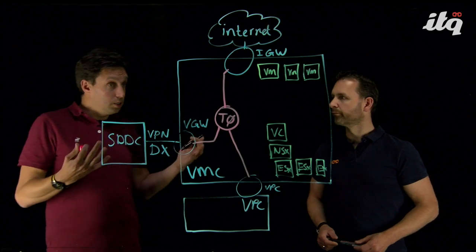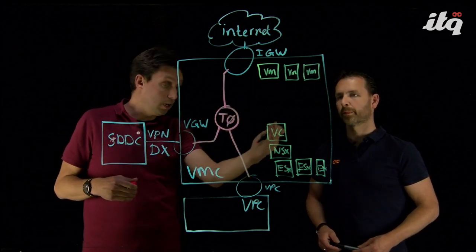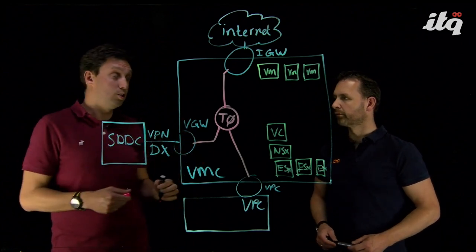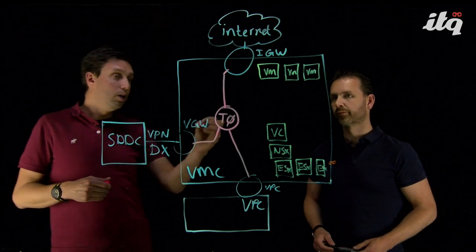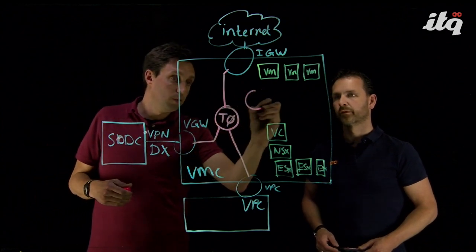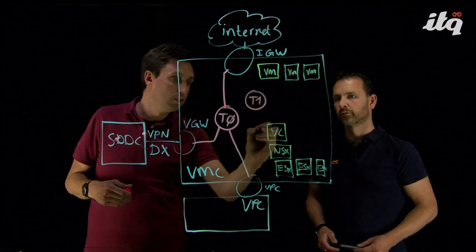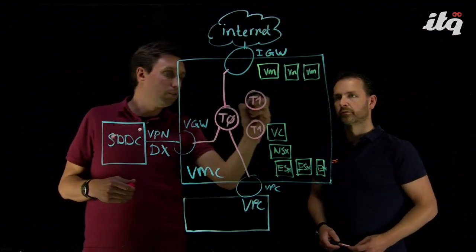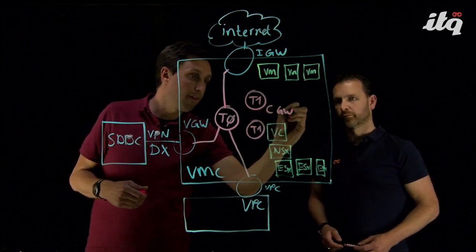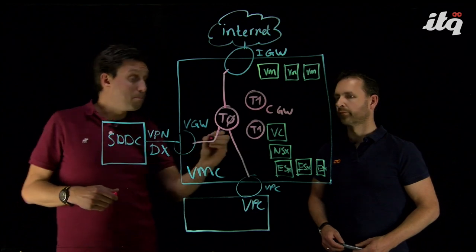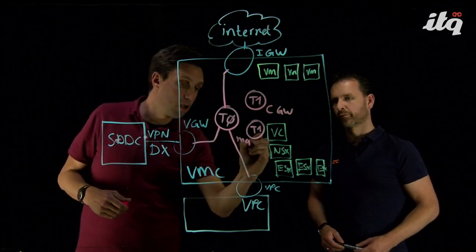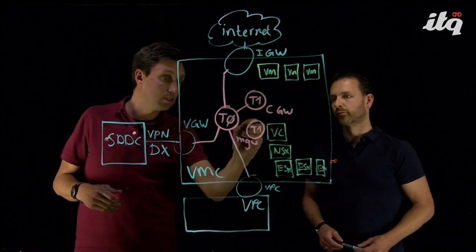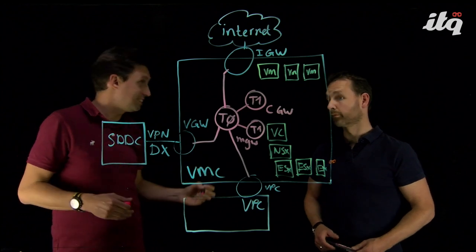But we still haven't got connectivity to our virtual machines, or to our management components. So, to provide that specific connectivity, we will implement two additional, what we call T1 routers. And we have one T1 router, what we call the compute gateway. And we have a second router, what we call the management gateway. And these two T1 routers are both connected to the T0 router.